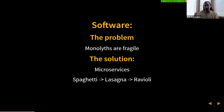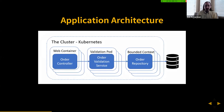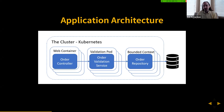We've made a shift in both software and hardware from one big thing to lots of little things. Each little piece is simpler, so we hopefully don't have the same level of complexity. In the old world, we had one big web server with an order controller, order validation service, and data access code. We split that into lots of little processes: a web container with the order controller, a validation pod with the order validation service, a bounded-context database, all organized in one big Kubernetes cluster.